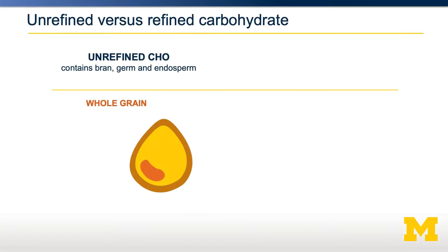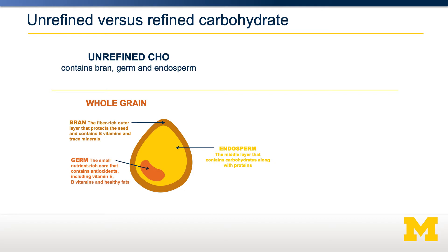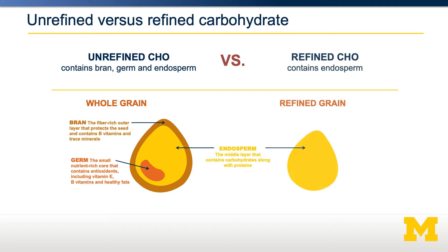Let's take a carbohydrate as an example — a wheat grain. The natural grain contains three important pieces: the endosperm; the bran, which is an outer layer that contains high levels of fiber and often some B vitamins and antioxidants; and the wheat germ, which contains more antioxidants including vitamin E and sometimes some healthy fats. A process of refining occurs where the bran and the germ are extracted, leaving just the endosperm, which contains most of the carbohydrates and the proteins.